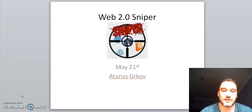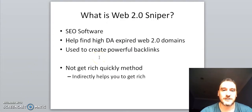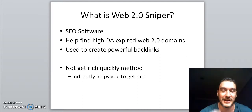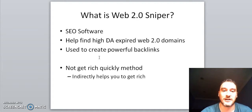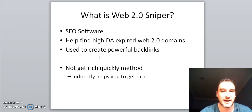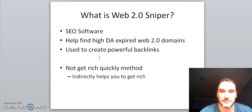Web 2.0 Sniper is a product by Atanas Gurkoff which launches on May 21st. Essentially it's an SEO software that will help you find high domain authority expired Web 2.0 domains. You can use these domains to rank your videos or websites in Google because it will give you powerful backlinks. It's not a get rich quick method, but if you understand the importance of SEO and ranking videos and websites then you'll understand that this indirectly can help you to get rich.